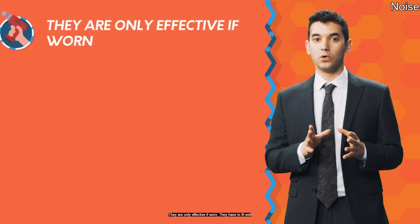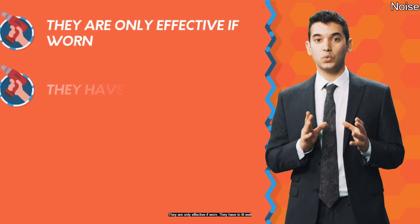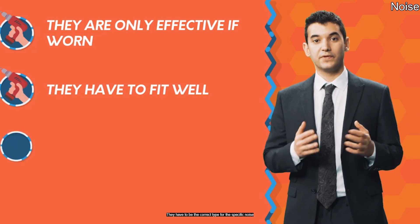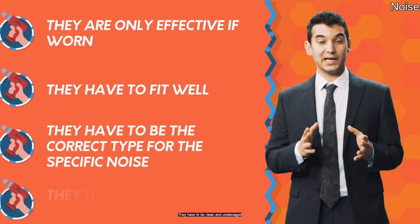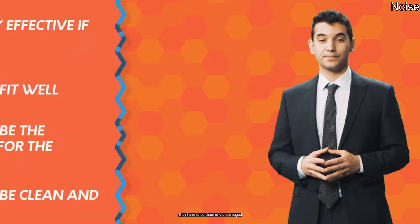If the noise cannot be controlled by these types of measure, then management should provide employees with hearing protection as a last resort. There are many types of hearing protection, including earplugs and ear defenders, and they all have the same issues: they are only effective if worn, they have to fit well, they have to be the correct type for the specific noise, and they have to be clean and undamaged. If you need to wear protection, you must have instruction and training to ensure correct fitting.